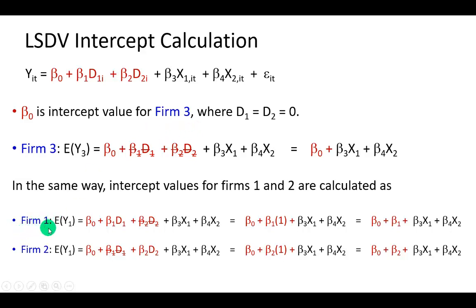and of course D2 is 0, is going to be the sum of beta sub 0 and beta sub 1. And for firm 2, which is where D2 is 1, while D1 is 0, is going to be the sum of beta sub 0 and beta sub 2.